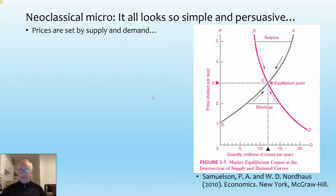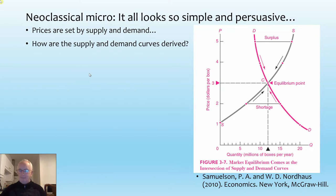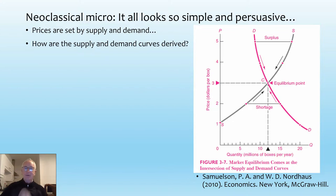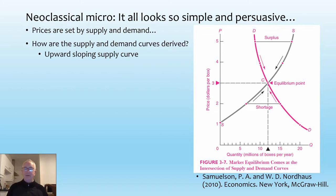This is taken from Samuelson and Nordhaus' textbook. The drawing is great, but how do you derive them? How do you actually say what causes the supply curve and what causes the demand curve? Start with the supply curve, and that's seen as being upward sloping.